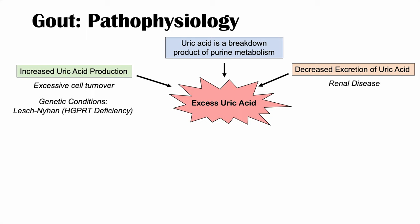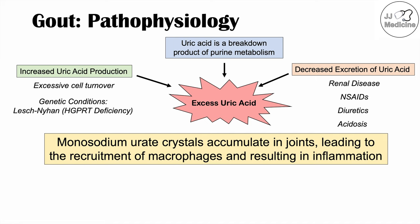In the category of decreased excretion of uric acid: uric acid is excreted by the renal system, so any disease of the kidneys can lead to decreased excretion. NSAIDs can affect the kidneys as well. Certain diuretics and acidosis can also cause decreased excretion of uric acid. Ultimately, because there's an excess level of uric acid, more monosodium urate crystals form, accumulate in joints, and lead to the recruitment of macrophages and white blood cells, causing inflammation.